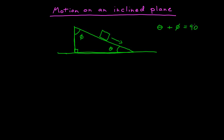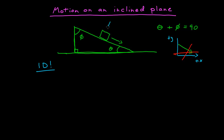We've been studying one-dimensional constant acceleration motion, so let's ask whether this is a one-dimensional problem. If I graph positive x and positive y axes relative to gravity, the motion seems to be going in two dimensions. But the answer is this is a one-dimensional problem if we choose the right coordinate system — and the right coordinate system is not this one.